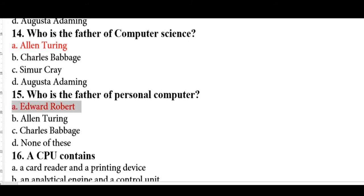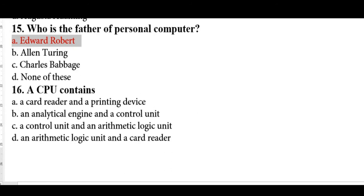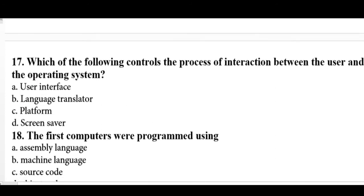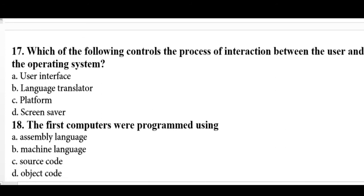Question sixteen: a CPU contains a control unit and an arithmetic unit. A card reader and printing device, or an electrical engine, are not part of the CPU. Question seventeen: the process of interaction between the user and the operating system is controlled by the user interface.